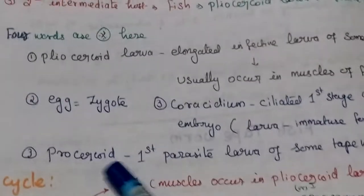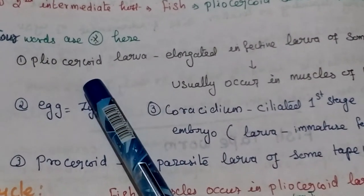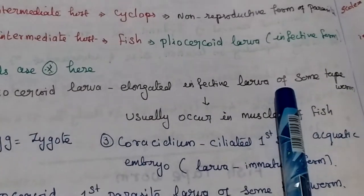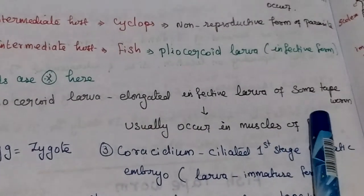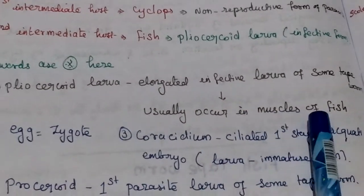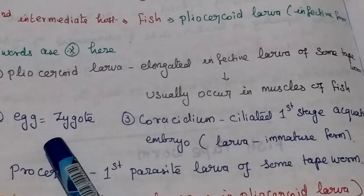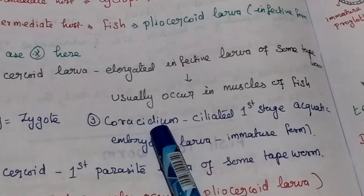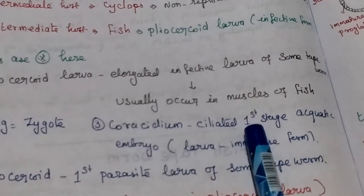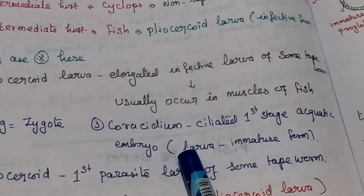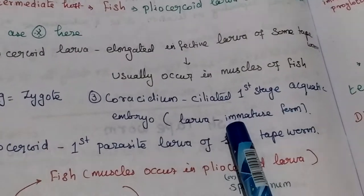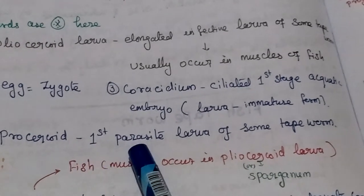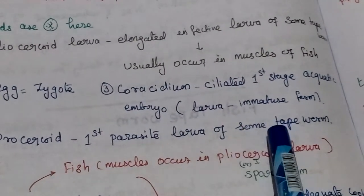In this life cycle, four things are very important. First is the plerocercoid larvae — the elongated infective larvae, usually found in the muscles of fish. Second is the egg. Third is the coracidium, which is a ciliated first-stage aquatic embryo — immature and not causing any infection. Fourth is the procercoid, the first parasite larvae form.